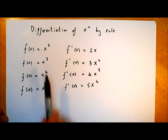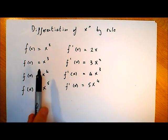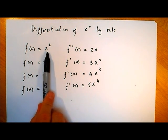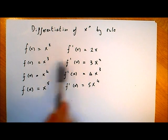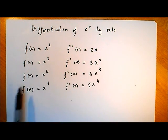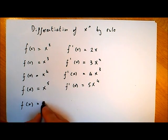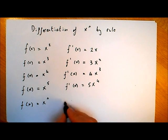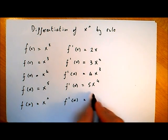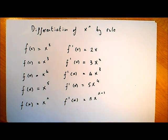By all of these, you should be able to see a pattern. x squared differentiates to give us 2x, so the slope of the curve of x squared is twice x. The slope of x cubed is 3x squared. In general, if we have f of x equal to x to the power of n, then f dash of x will be equal to n multiplied by x to the power of n minus 1.